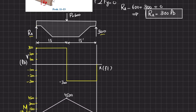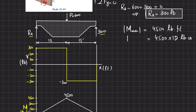The maximum absolute bending moment is 4500 pound-feet. Converting to inch units: 4500 times 12 equals 54,000 pound-inches. The absolute maximum shear force is 300 pounds.